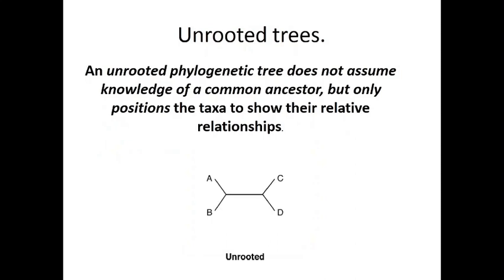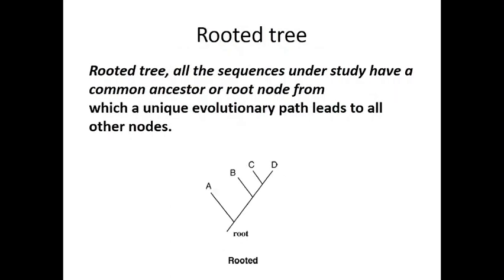Ek aur terminology hai — unrooted tree. Unrooted tree mein common ancestor assume kiya jata hai but exactly wo ancestor kahan hai, kaunsi position pe hai, wo pata nahi chalta. Fossils mein bhi kabhi kabhi root pata nahi chalta. Jab root identify nahi ho pata, aisi branching unrooted tree kehlati hai. Doosra hai rooted tree, jismein humko pata hota hai ki ye root hai — A se B bana, phir C, phir D — uska origin pata hai.